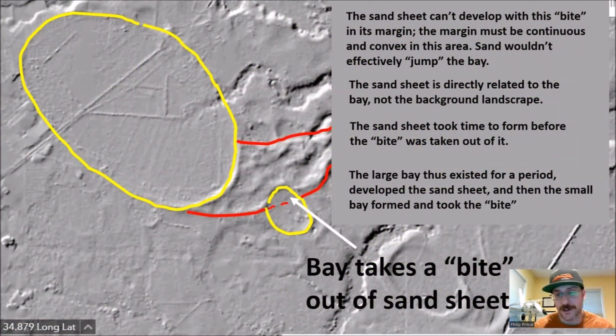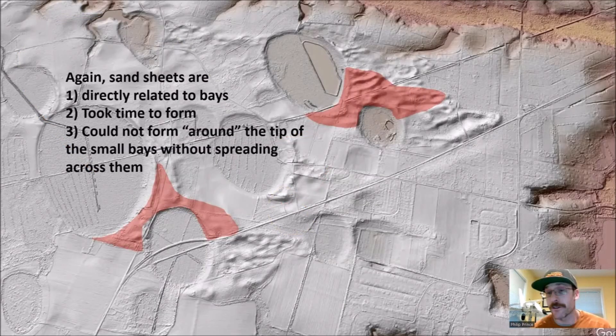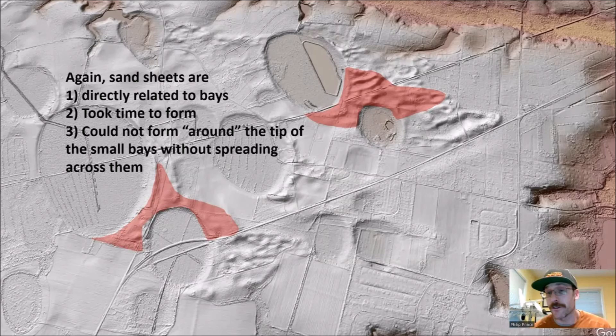Philip discusses a sequence where the bay had to form first, then the sand sheet formed, and finally another bay overlaid the sand sheet. He says: "When you got the sand dune complexes that are coming off the bays themselves and then you got other bays messing with those, it is very good evidence that the formation of these features was a progressive thing. It was a reflection of climatic and landscape conditions and not a single catastrophic type of event."